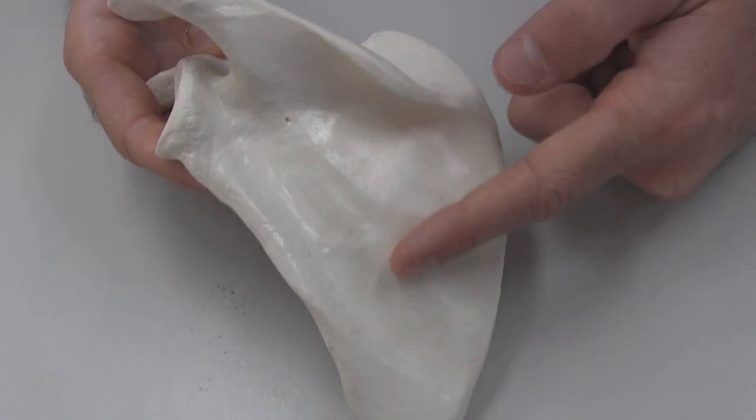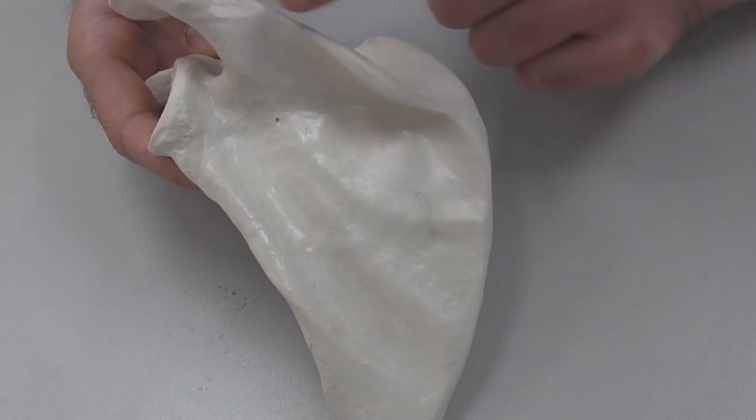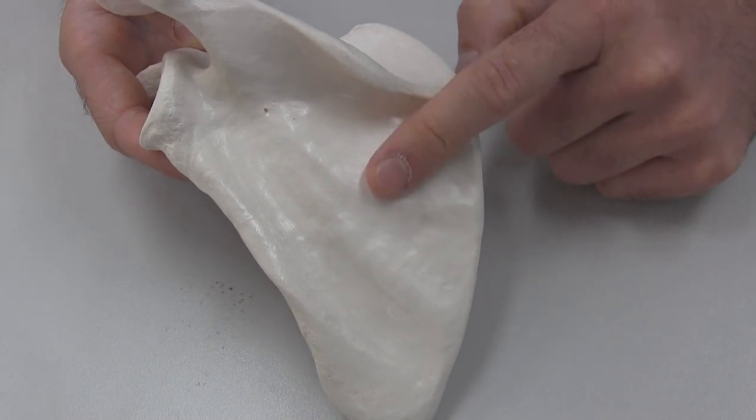Below the spine, we've got the infraspinatus fossa. The infra comes from inferior to the spine, so infraspinatus, below the spine.